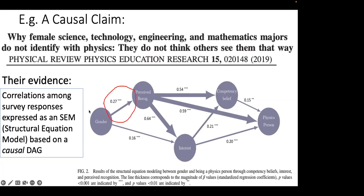The effect described in the title and abstract is the arrow from gender to perceived recognition — that somehow in the social context of teaching assistants, family, friends, and so on, females will perceive less recognition than males. The entire point of the paper concerns this arrow. It doesn't go into depth about what accounts for it, but it's entirely about the existence of this coefficient, which is moderately large: gender accounts for 0.27 squared, about 7% of the variance in perceived recognition — enough to pay some attention to.